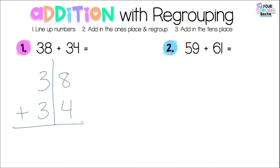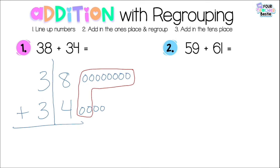Step two: add in the ones place and regroup. I have 8 plus 4. I'll draw 8 ones and 4 ones. I can make a ten — 8, 9, 10 — I made a ten! How many ones are left? Two. The 2 lives in the ones place, and the ten I created goes up to the tens place — plus one ten. Step three: add in the tens place. 1 plus 3 plus 3 is 7 tens. Total is 72.